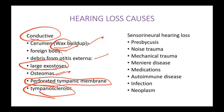For sensorineural hearing loss, the first and main cause is presbycusis, where an elderly patient has a degenerative nerve issue. The eighth cranial nerve has degenerated, which is why the patient is unable to hear bilaterally — on both sides.